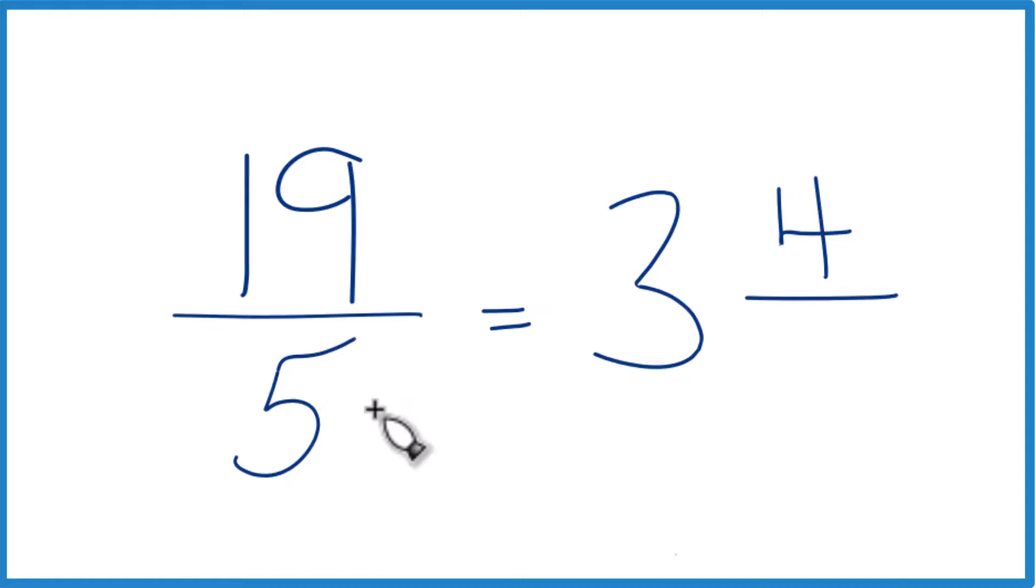And then we just keep the denominator the same. And this improper fraction, 19 fifths, equals the mixed number 3 and 4 fifths. We say it's improper because the numerator is larger than the denominator.